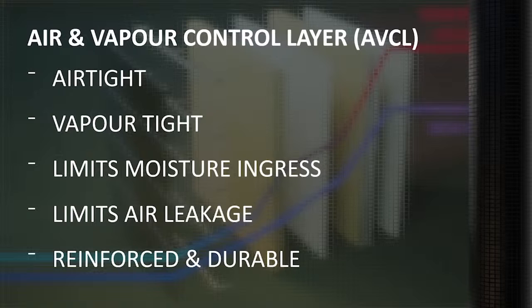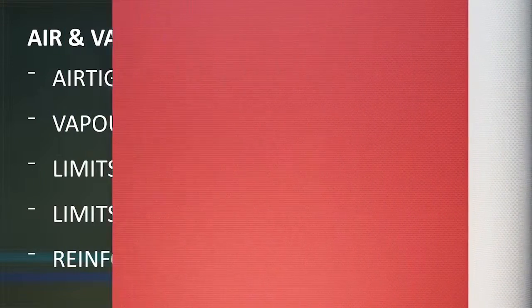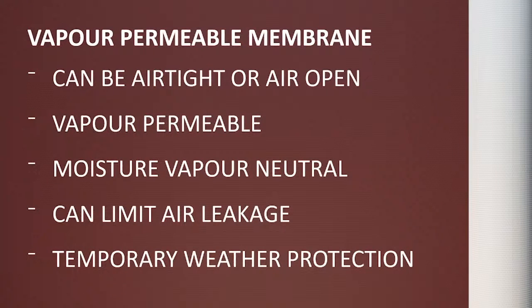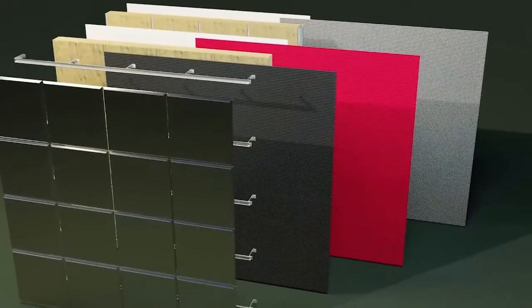AVCLs are typically used internally on the warm side of any insulation. The other membrane type is a vapour permeable membrane or VPM. These membranes permit the passage of moisture in vapour form but not as a liquid. They can however be either airtight or air open depending upon the specification and purpose. Because they do not trap or retain moisture they can be considered moisture vapour neutral, meaning they can be placed almost anywhere in relation to the insulation subject to the correct performance criteria being met. VPMs are often used externally where they can provide temporary weather protection during construction or during transportation of components. Across all types of membranes it's important to ensure the correct material is placed in the correct location and the specified performance achieves the desired effect.